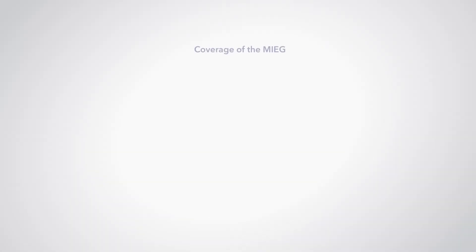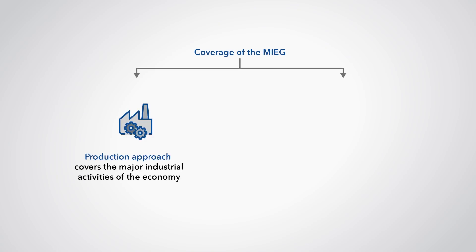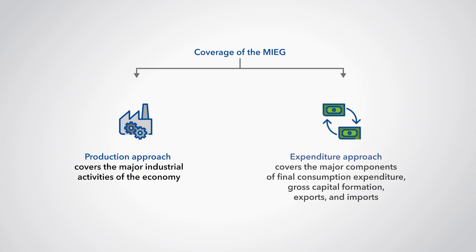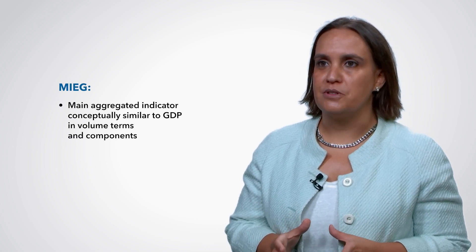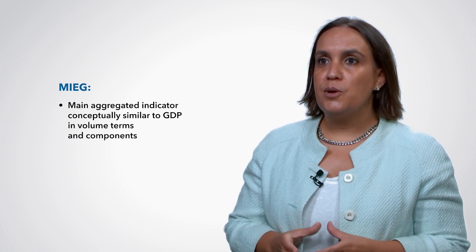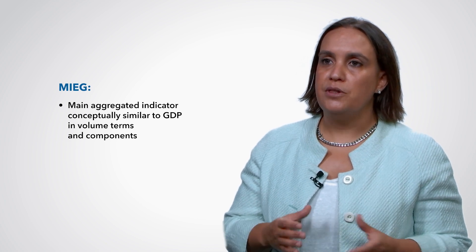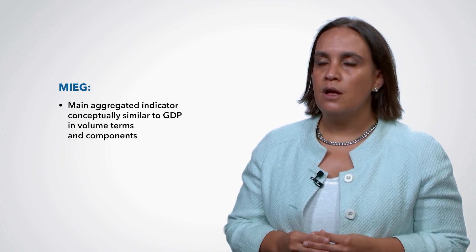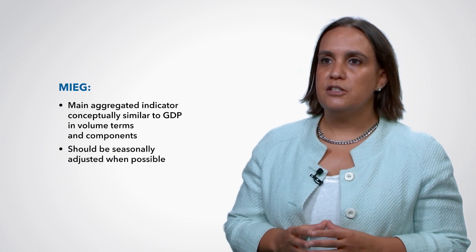The coverage of the MIEG is usually based on either the GDP compiled by the production approach, which covers the major industrial activities of the economy, or the expenditure approach, which covers the major components of final consumption expenditure, gross capital formation, exports and imports. The MIEG will usually include a main indicator that is conceptually similar to GDP in volume terms, along with other series representing components or groups of components within the overall aggregates. When possible, the indicator should be seasonally adjusted.